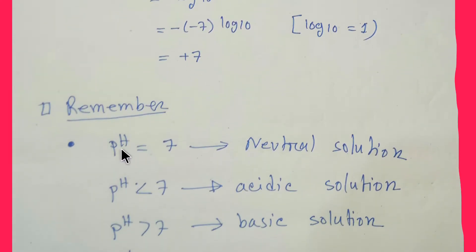If the value of the pH of a solution is 7, then that solution will be neutral solution. If the pH of a solution is less than 7, then the solution will be acidic solution. And if the pH of the solution is greater than 7, the nature of the solution will be basic solution.